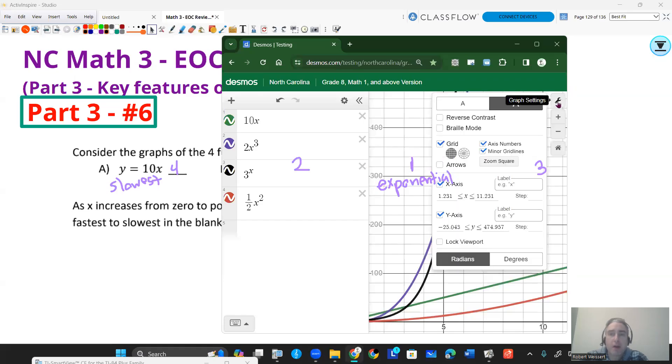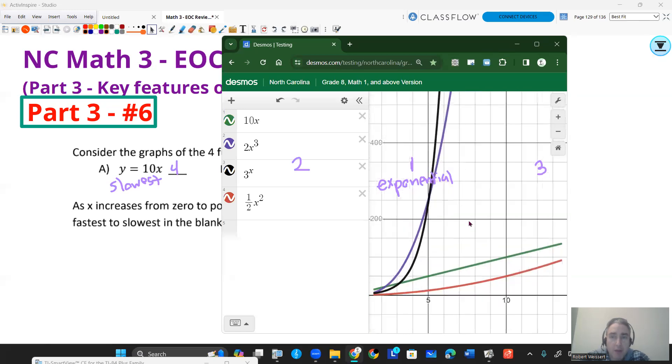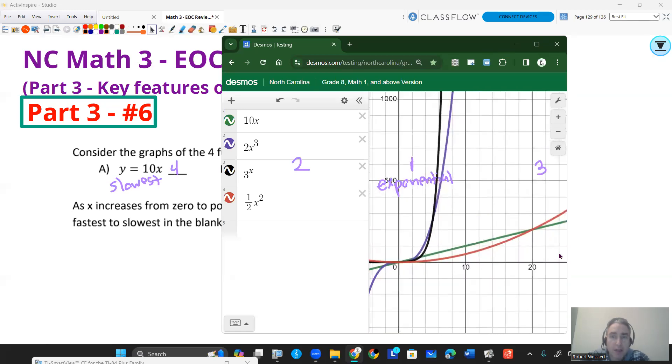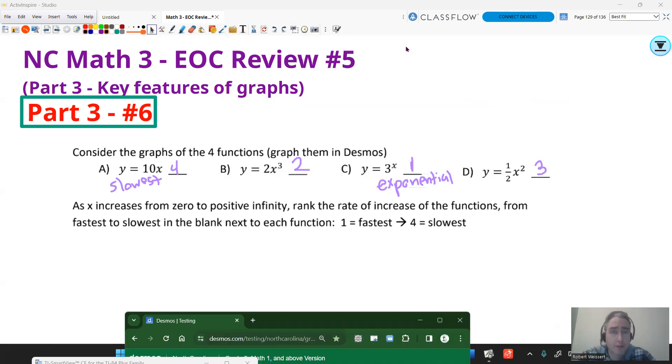I changed the scale on my graph. I made the y-axis be much more higher. So you can see that rate of increase. And you can see over time that that linear function is going to be the slowest followed by the quadratic, followed by the cubic, followed by the exponential at the end. So that'll always level out at the end. And that concludes the key features of graphs video.